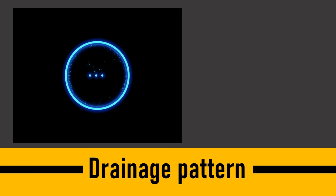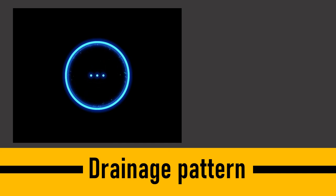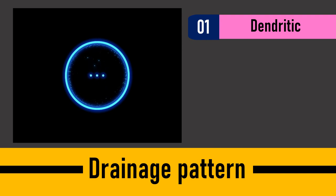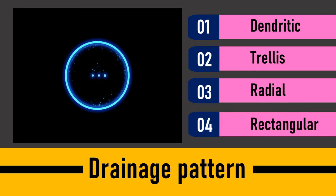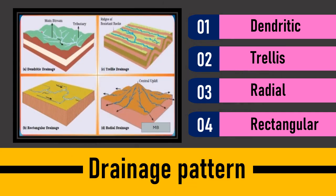Next is the drainage pattern. Throughout the world, drainage patterns have been bifurcated into different categories, but in India we have classified them into four segments: dendritic, trellis, radial, and rectangular. Let's have a look at the picture showing all four patterns.